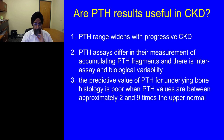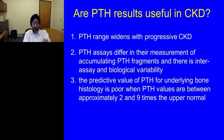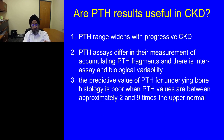Are PTH assay results even useful in patients with chronic kidney disease? I'll leave that to your own judgment. The reference range for PTH in CKD patients is very wide — it can be two to nine times that of the healthy population, and clinicians are not supposed to send patients for surgery as long as values fall within this range. That is a very wide range that may cause us to miss patients who would benefit from surgery for secondary hyperparathyroidism.